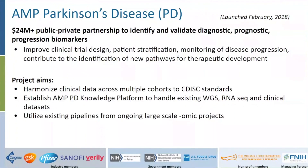AMP PD — AMP Parkinson's disease — is a public-private partnership between the National Institutes of Health, the U.S. Food and Drug Administration, industry partners including Celgene, GlaxoSmithKline, Pfizer, Sanofi, and Verily, and nonprofits including the Michael J. Fox Foundation. This partnership is managed through the Foundation of the National Institutes of Health. The goal is to transform and accelerate drug development in Parkinson's disease by providing the expertise and support needed to determine which biomarkers show the greatest potential for predicting PD and its progression.